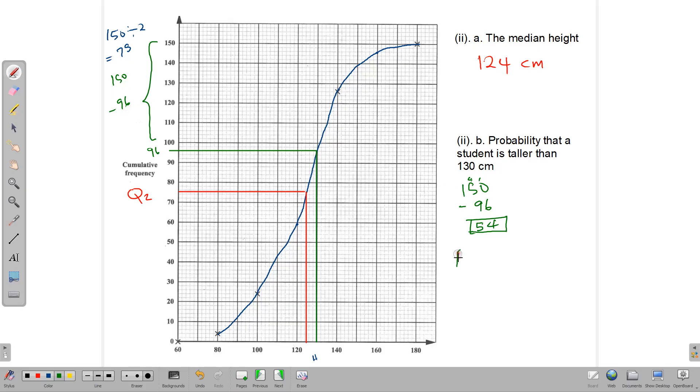So the probability that the student is taller than 130 centimeters is going to be 54 over 150. And as it is with probability, we often write our answer in the simplest form. This can be reduced. So divide both of these by 2. 54 divided by 2, that gives us 27. And that's over 75. And that's our answer as it is.